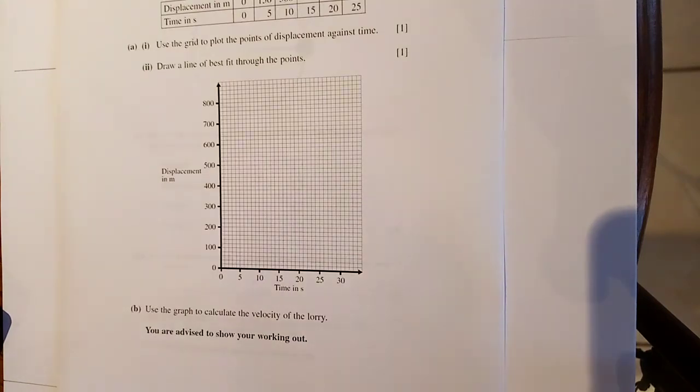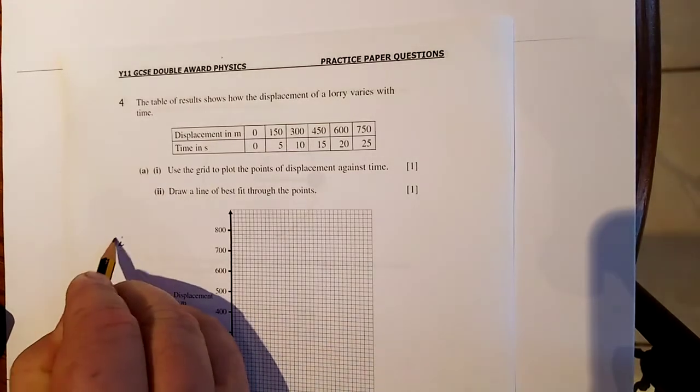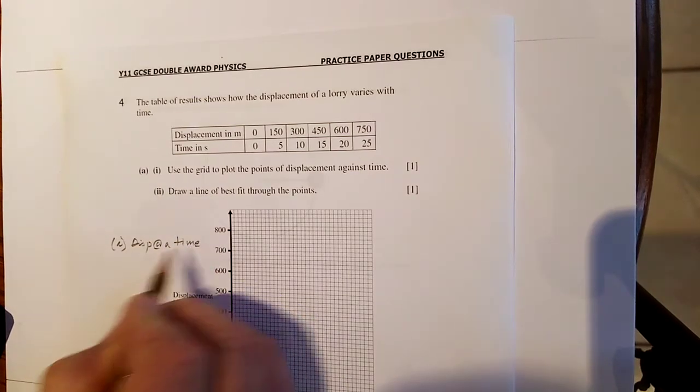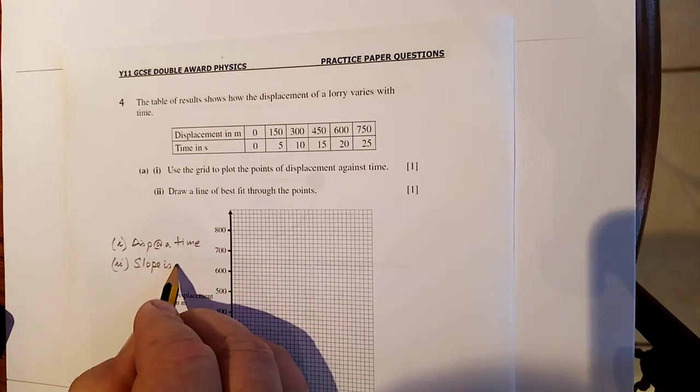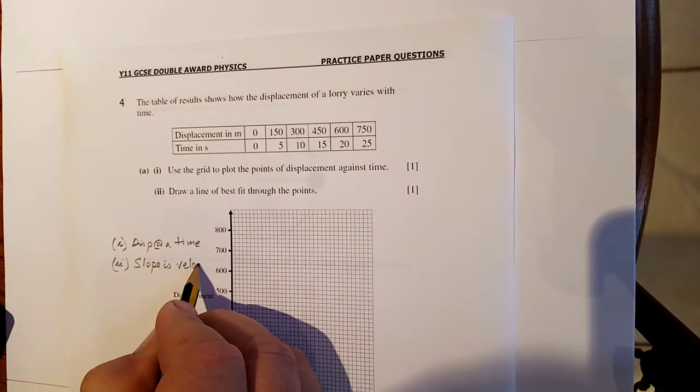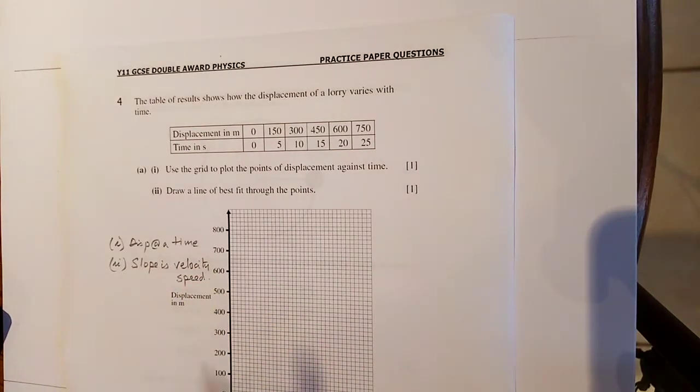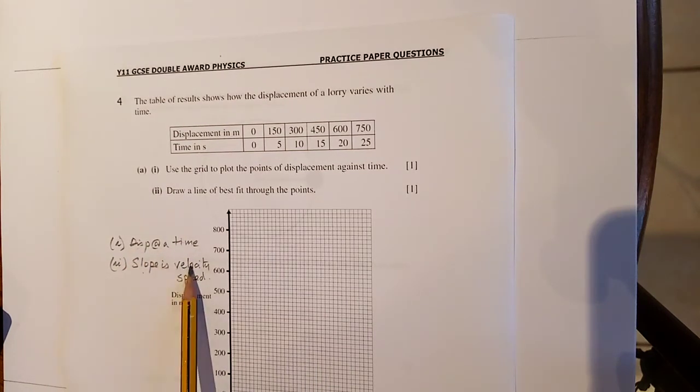Next question. Let's see it here. The table of results shows the displacement of a lorry as it varies with time. So it's a displacement time graph. And there are only two things we can tell from a displacement time graph. Displacement at a time. And two, slope is the velocity, or speed. Don't make that silly mistake that I made there. So two things here. Is a distance time graph. You can tell the distance at a certain time. And the slope is the velocity or speed.